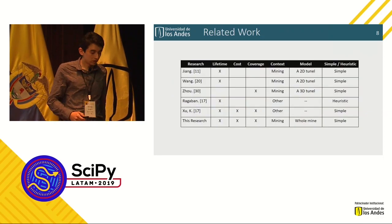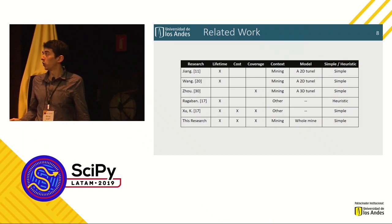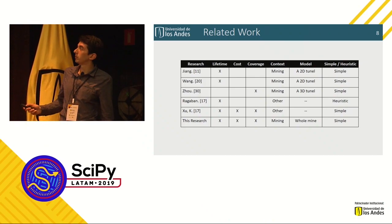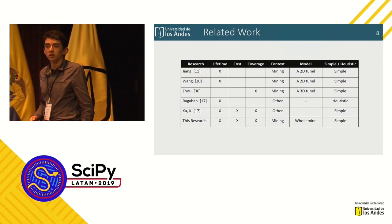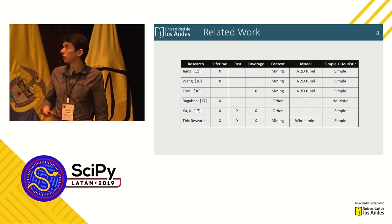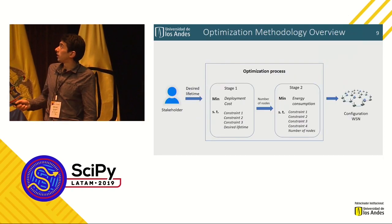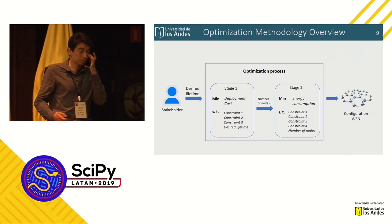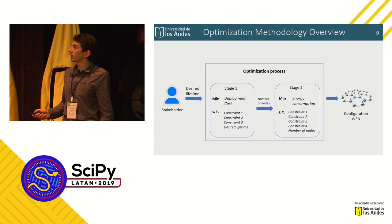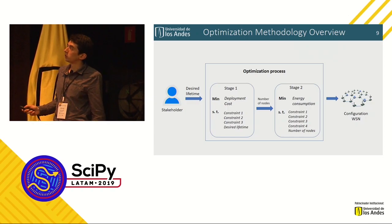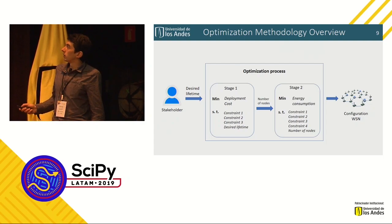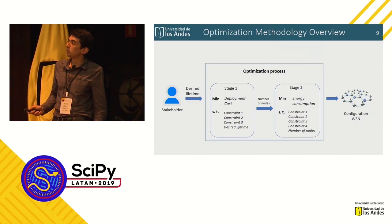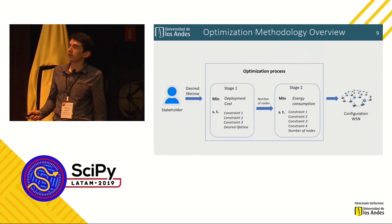Regarding related work, we did not find an approach that addresses all three objectives together. In our approach, we address lifetime, cost, and coverage in the context of designing wireless sensor networks for monitoring gases in underground mines. This is an overview of our methodology. We propose an optimization process composed of two stages, known as lexicographic optimization. The input is the desired lifetime provided by a stakeholder.